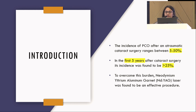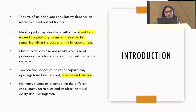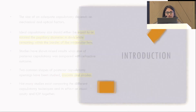The incidence of PCO after cataract surgery was between 5 to 50%, and after 5 years it was found to be more than 25%. Nd:YAG was found to be a very effective method to deal with it. An ideal capsulotomy size, as the literature says, should be equal to or exceed the pupillary diameter in the dark, while remaining within the border of the intraocular lens. Two common shapes of posterior capsulotomy openings have been studied: cruciate and circular. However, not many studies exist comparing different capsulotomy techniques.